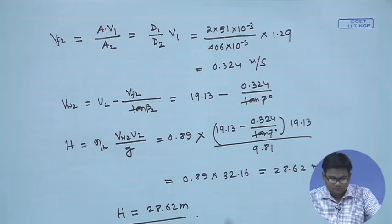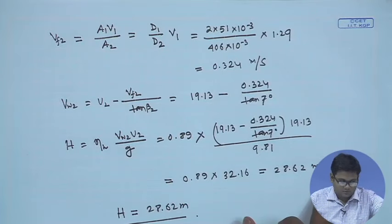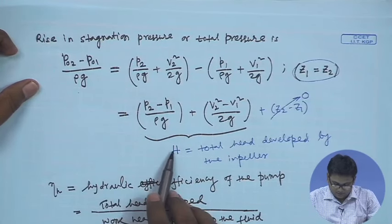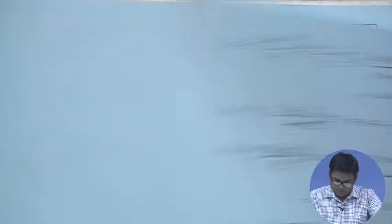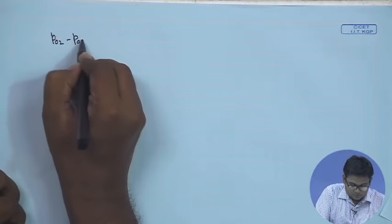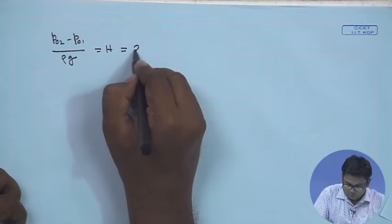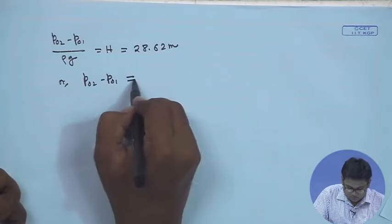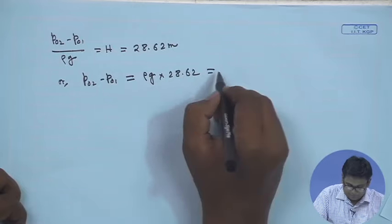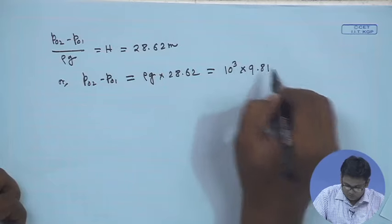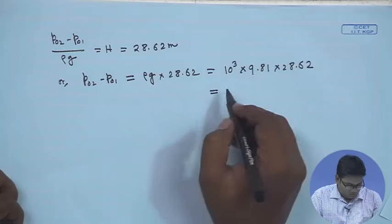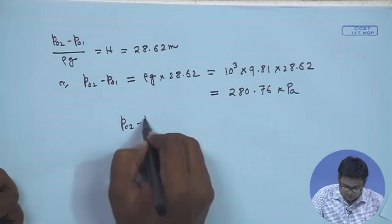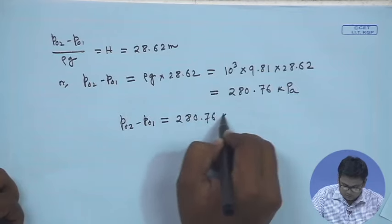The rise in stagnation pressure head equals the total head developed by the impeller. So (p02 - p01)/ρg = H = 28.62 m, giving p02 - p01 = ρg × 28.62 = 1000 × 9.81 × 28.62 = 280.76 kPa. The rise in stagnation pressure across the impeller is 280.76 kPa.